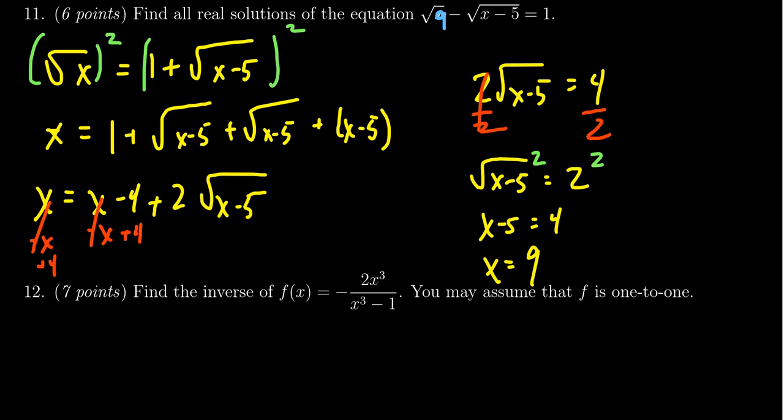If you plug in 9 here, you're going to get the square root of 9 minus the square root of 9 minus 4. Just looking on the left-hand side, the square root of 9 is 3. With the second radical, 9 minus 5 is 4. So you get the square root of 4, which is a 2. 3 minus 2 is, in fact, equal to 1. This is a solution to the equation.